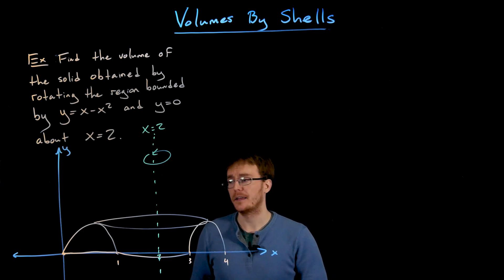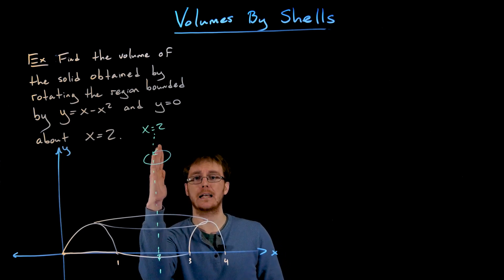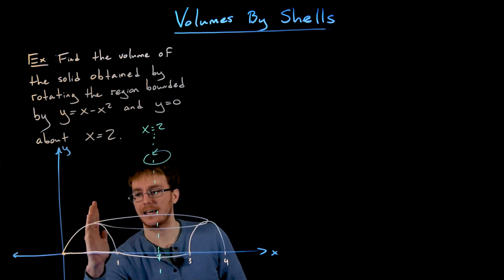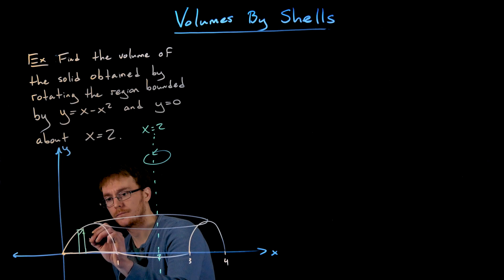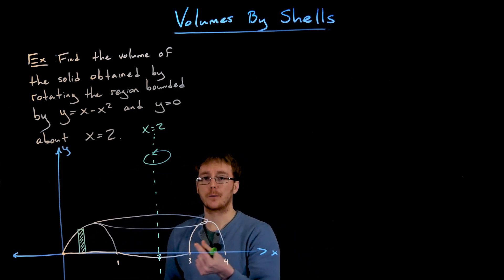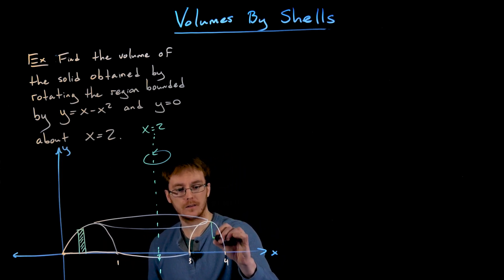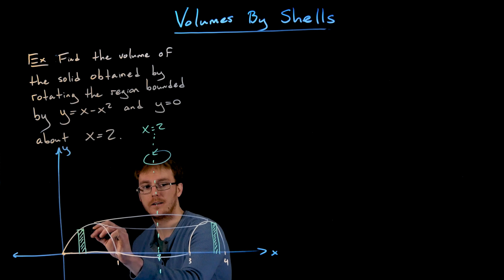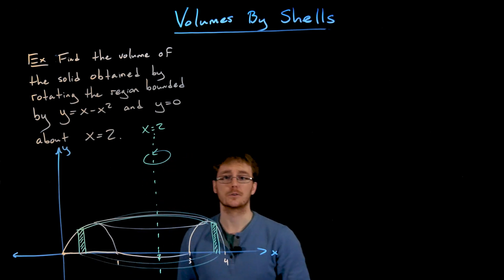With the shell method, we take a rectangle or slice that is parallel to our axis of rotation. Since x equals two is vertical, we use a vertical approximating rectangle. We then rotate that approximating rectangle around the axis of rotation at x equals two, and that generates one of our cylindrical shells.